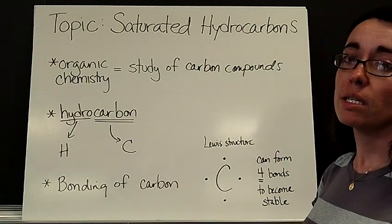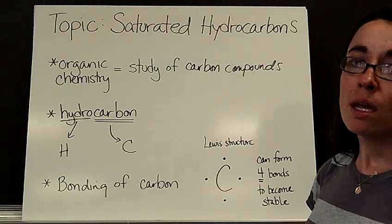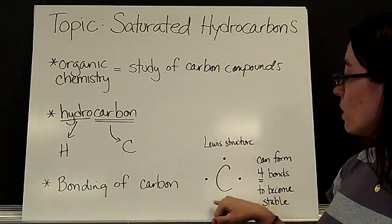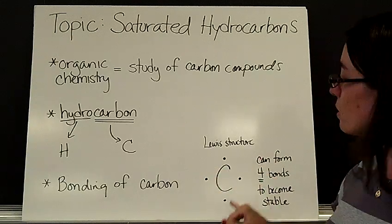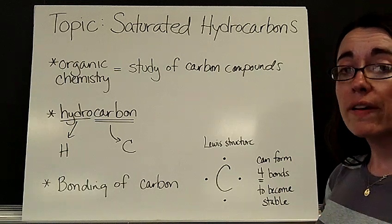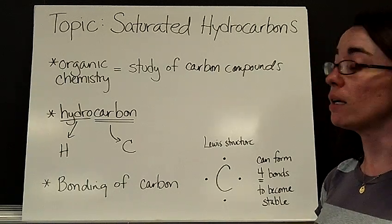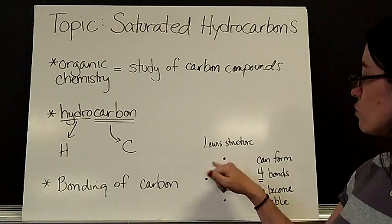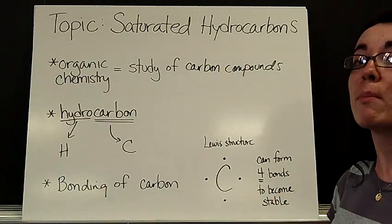Now the reason there's so much diversity in carbon-containing compounds is that the bonding of carbon is kind of unusual. It can form a lot of different bonds. If you take a look at the Lewis structure that I have here, you can see it has four valence electrons. That means it has four valence electrons that could participate in a sharing or a covalent bond. So this carbon structure right here could form up to four bonds in order to become more stable.